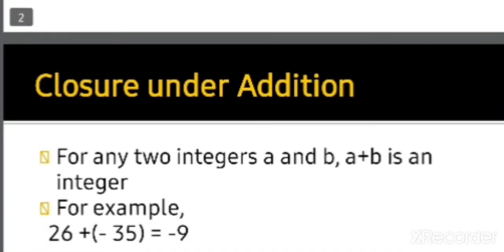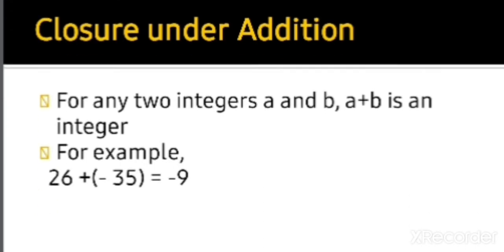Closure under addition: for any two integers a and b, a plus b is also an integer. For example, if a is 26 and b is minus 35, when we add them we get minus 9, which is also an integer. So integers are closed under addition.